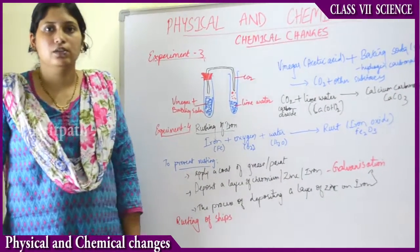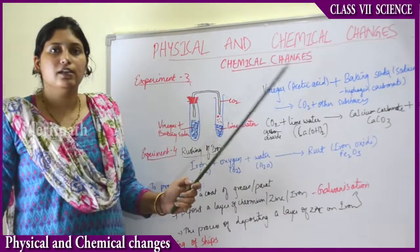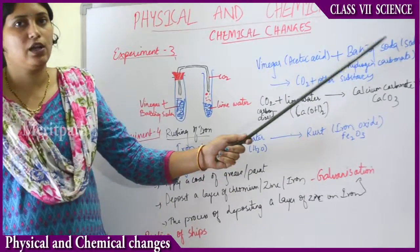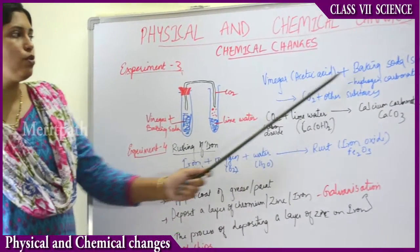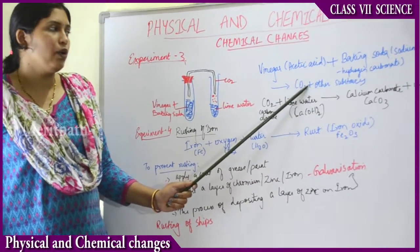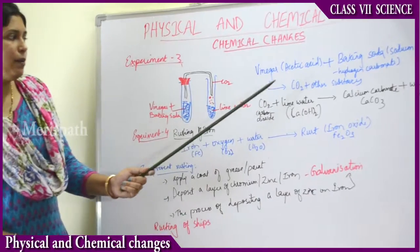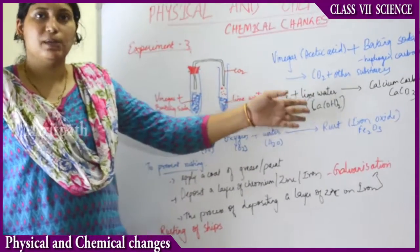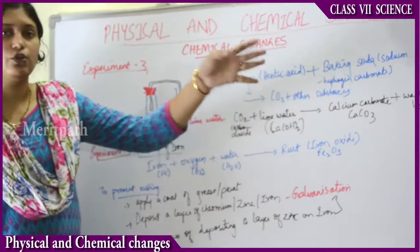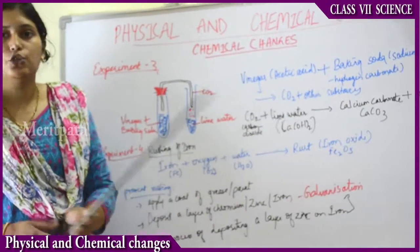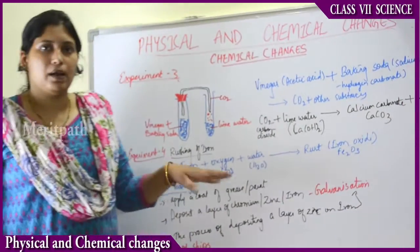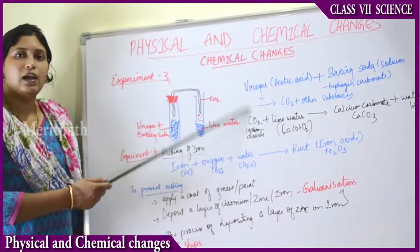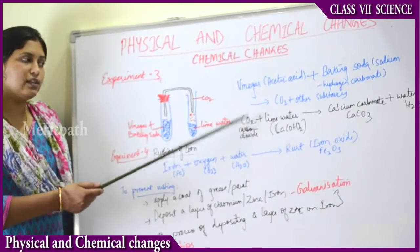Vinegar, also known as acetic acid, when mixed with baking soda — sodium hydrogen carbonate, the whitish powder we use in food — they give rise to carbon dioxide gas plus some other substances. When this carbon dioxide CO₂ was passed into lime water, indicated by Ca(OH)₂ which is calcium hydroxide, CO₂ mixed with Ca(OH)₂ gives rise to a new substance called calcium carbonate, CaCO₃ — the chunna we apply on beetle leaves. This reaction proves it is a chemical change: new substances formed along with gas evolution and color change.